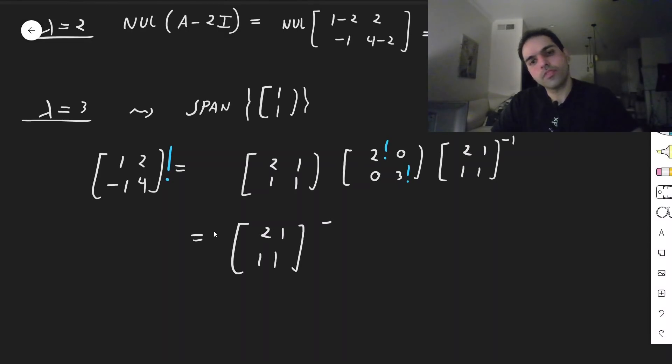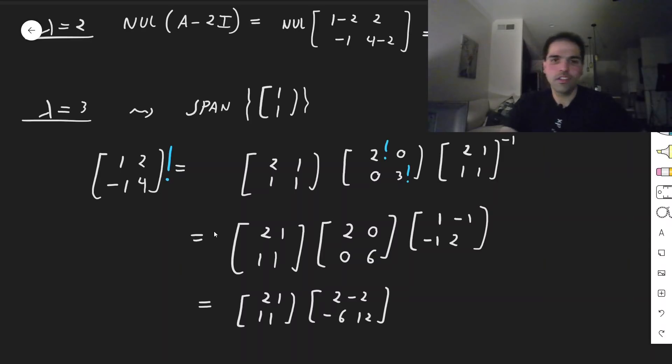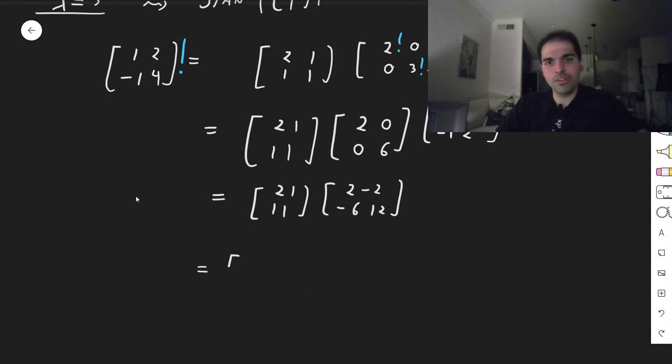So what this becomes, it's [2, 1; 1, 1]. Then 2 factorial is 2, [2, 0; 0, 6] for 3 factorial. And then the inverse here, very nice, because the determinant is 1. So this becomes [1, -1; -1, 2]. And then you calculate this, [2, 1; 1, 1] [2, 0; 0, 6] [1, -1; -1, 2]. And you do the messy algebra. So 4 - 6, that is -2. -4 + 12, that becomes 8. 2 - 6, that is -4. And then -2 + 12, that is 10. So the factorial of [1, 2; -1, 4] is [-2, 8; -4, 10].